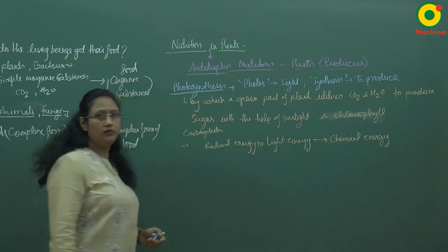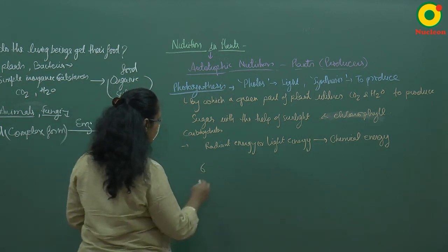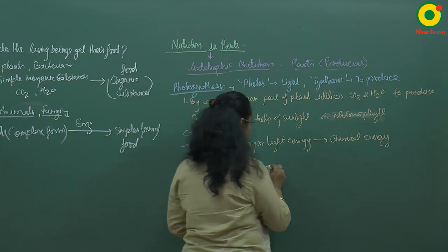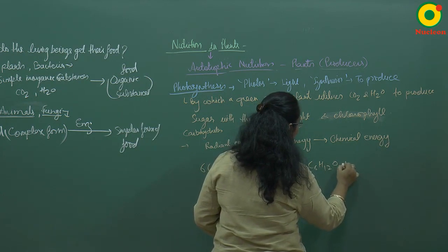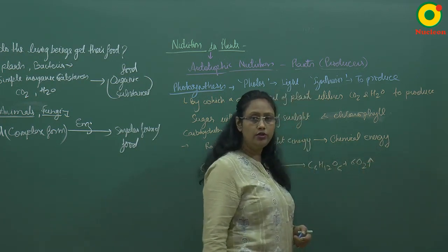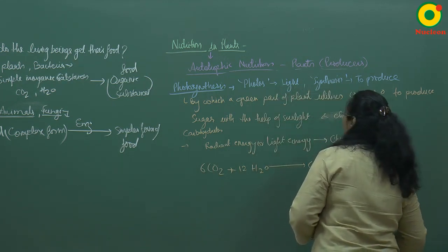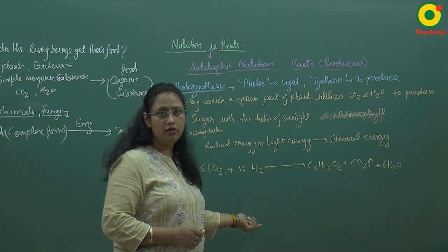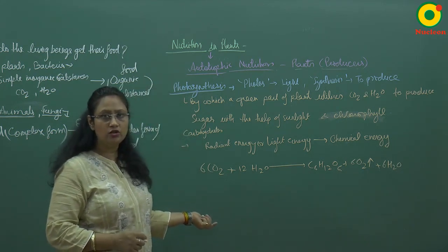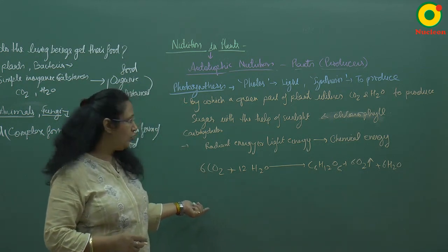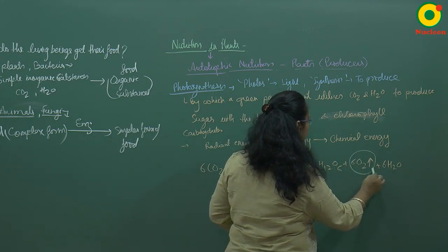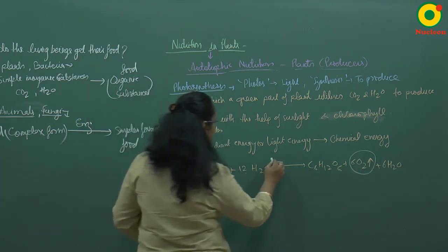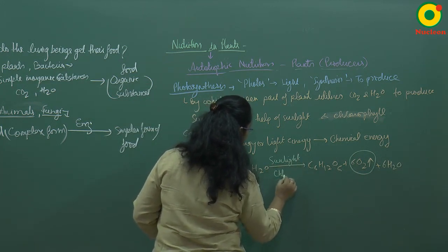This can be demonstrated by an equation. Six molecules of carbon dioxide combine with 12 molecules of water to form carbohydrates (simple sugar), and it gives rise to oxygen molecules and some water molecules. This is the process by which oxygen is present on Earth. Oxygen in our atmosphere is a byproduct of photosynthesis, occurring in the presence of sunlight and chlorophyll.